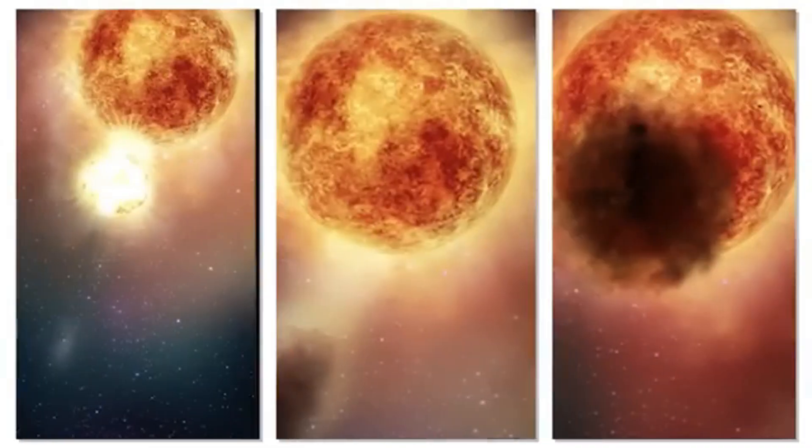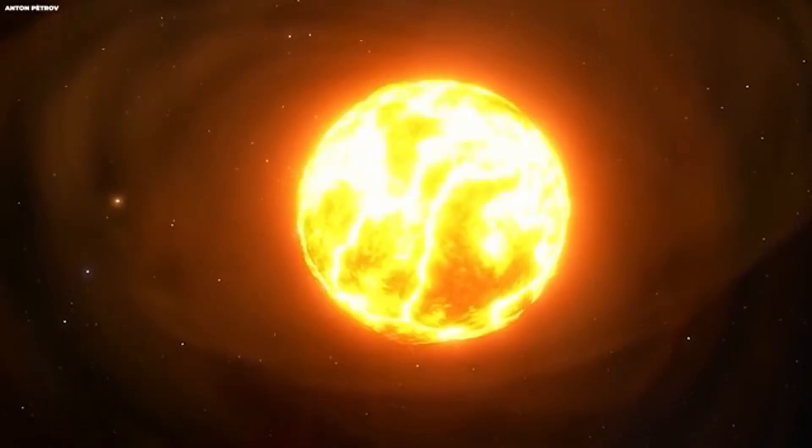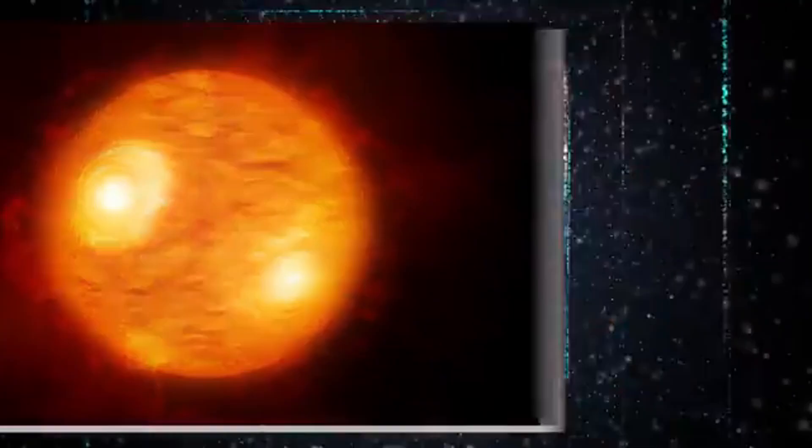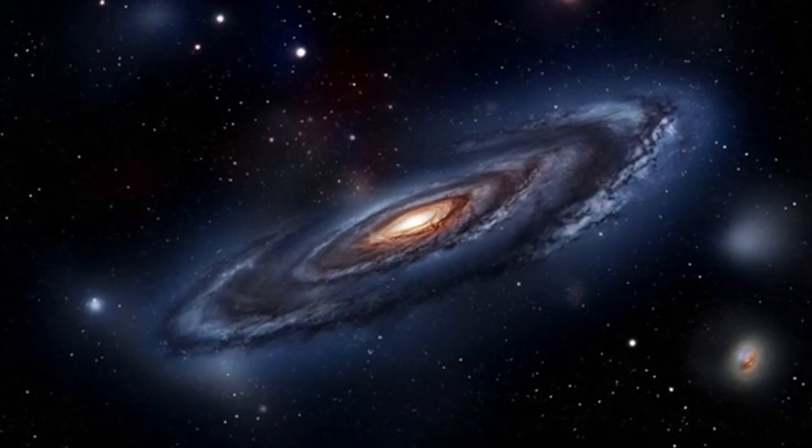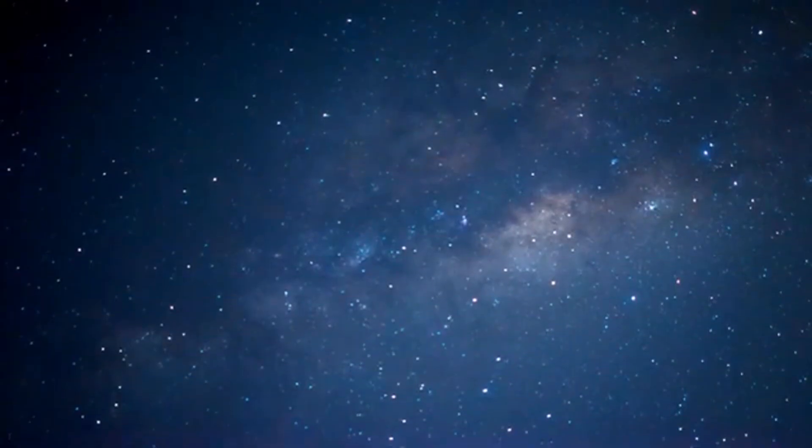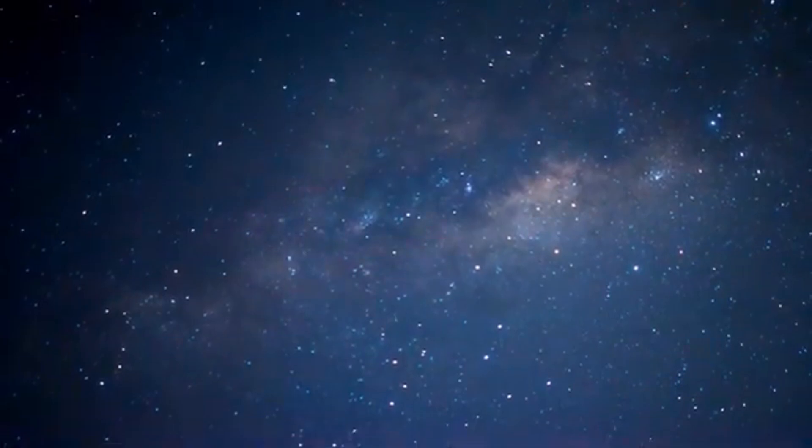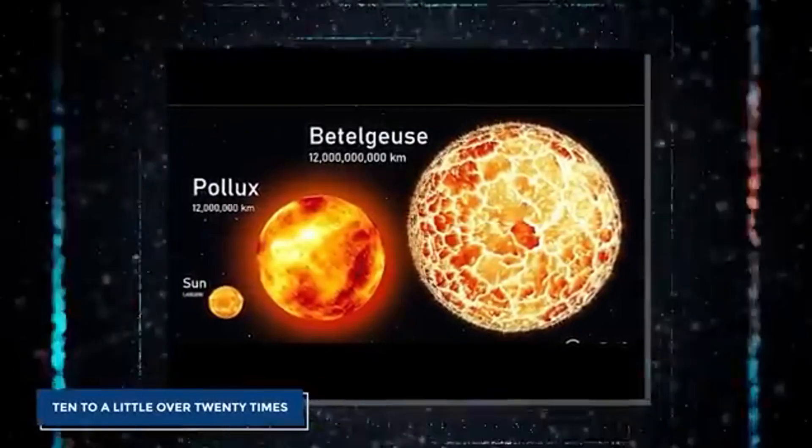The variable brightness of Betelgeuse is another intriguing aspect. It's a semi-regular variable star, which means its light periodically waxes and wanes, and this variability is a characteristic dance of luminosity that has fascinated astronomers and sky-watchers for centuries. Typically, Betelgeuse undergoes a 400-day cycle, along with a longer cycle that stretches about five years. These cycles have been documented as far back as 1836 by Sir John Herschel, and possibly even earlier in Aboriginal oral traditions.